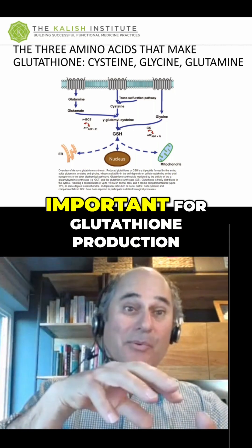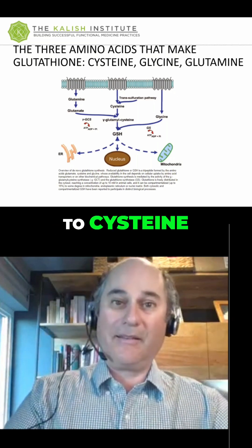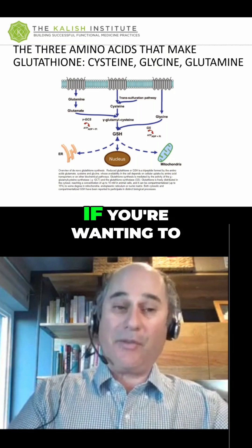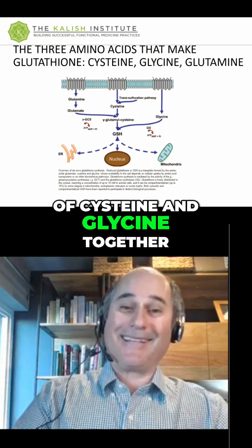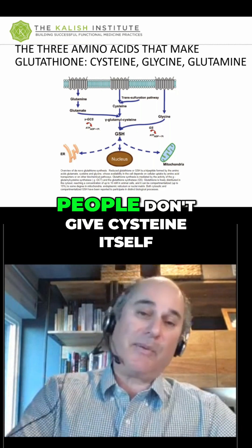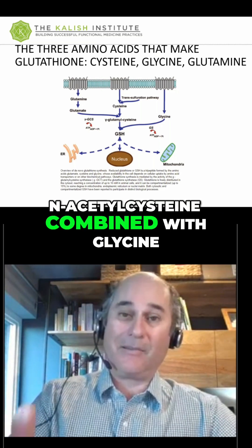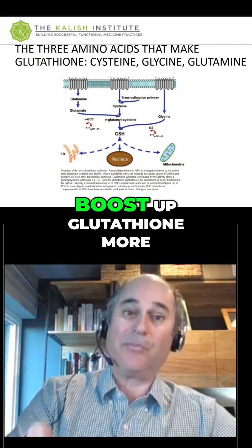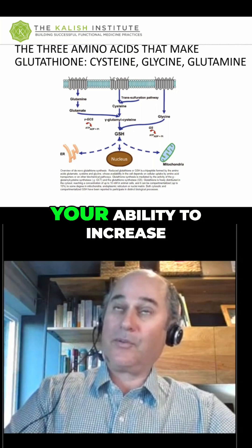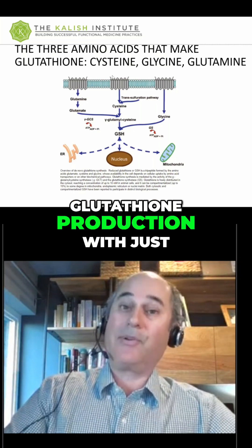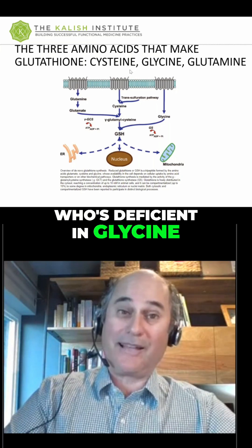Cysteine is probably the most important for glutathione production, and glycine is close behind. So usually if you're wanting to boost glutathione, you use a combination of cysteine and glycine together. Usually people don't give cysteine itself — they give NAC or N-acetylcysteine. Combined with glycine, this has been shown to boost glutathione more effectively than just NAC by itself. Your ability to increase glutathione production with just NAC alone would be very limited in someone who's deficient in glycine.